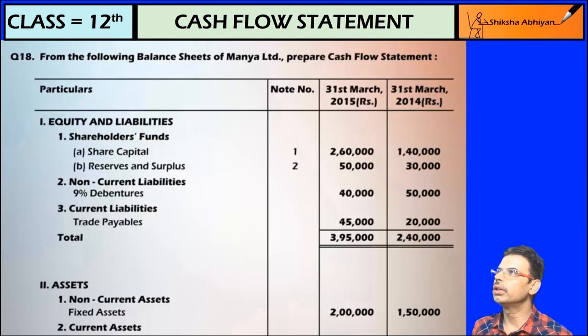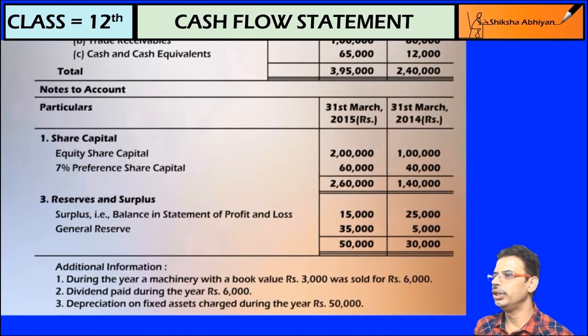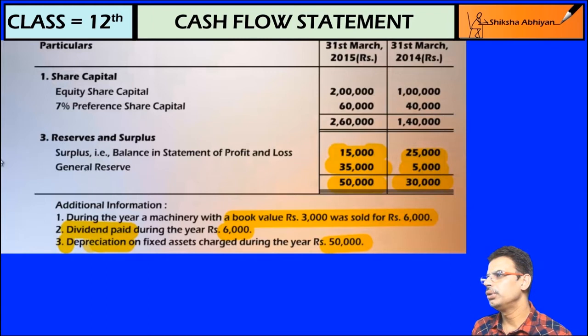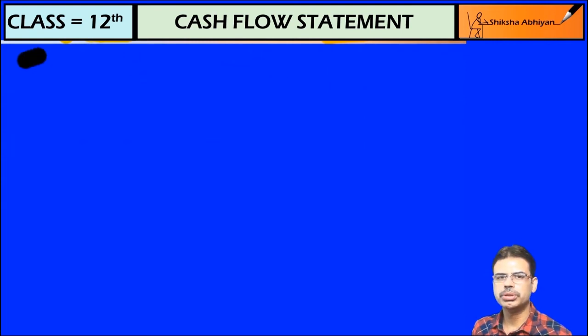Cash flow statement from the following balance sheet of Money Limited. Prepare cash flow statement 31st March 2014 and 31st March 2015 in shareholder funds share capital reserves and surplus. Last year 30,000, this year 20,000. Reserves and surplus last year was 25,000, then 15,000, and the general reserve is about 5,000 to 35,000. We have given some adjustments - machinery of 3,000 to 6,000, the dividend is paid for 6,000, and the depreciation is charged with fixed assets by 50,000. First we will make working notes.